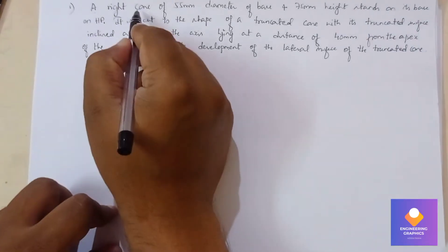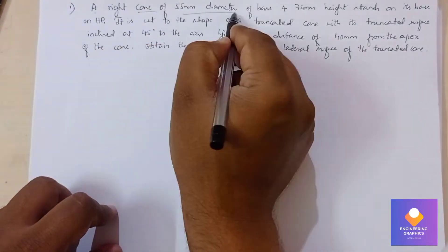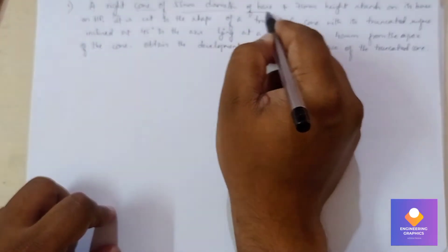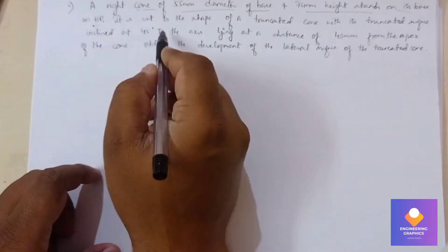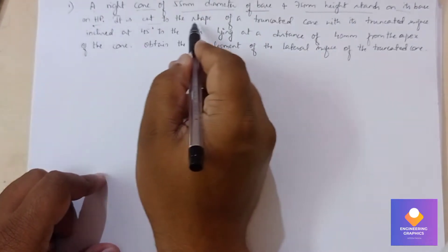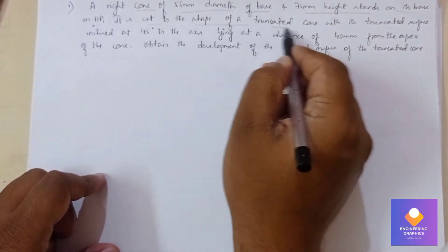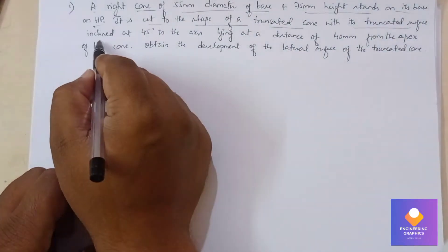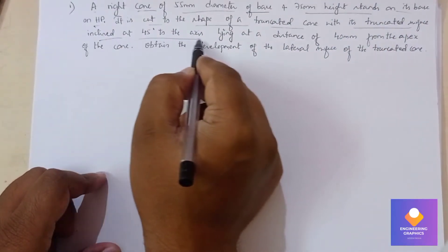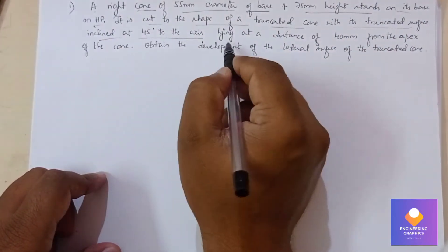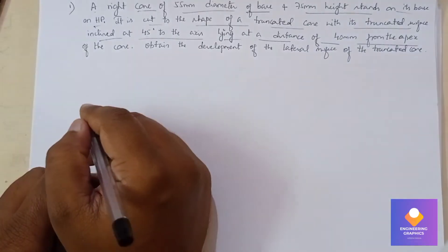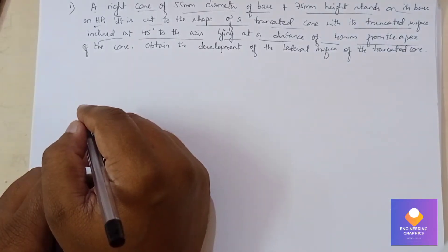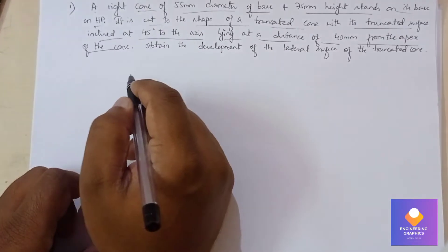In this problem, a cone of diameter 55 mm and height 75 mm is given. It is resting with respect to its base on the HP and is cut by a section plane at an angle of 45 degrees to the axis, occurring at a distance of 40 mm from the apex. We need to draw the development of this truncated cone.